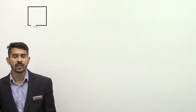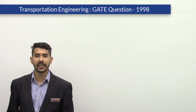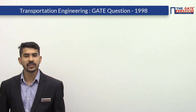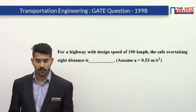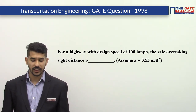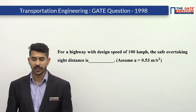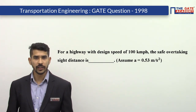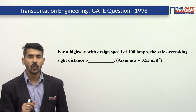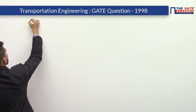Today we will discuss a question from transportation engineering. It is a GATE question asked from the topic known as overtaking sight distance. This question was asked in GATE 1998. The question says: for a highway with design speed of 100 kilometers per hour, the safe overtaking sight distance is dash, assuming acceleration equal to 0.53 meter per second square.